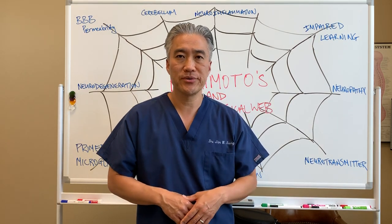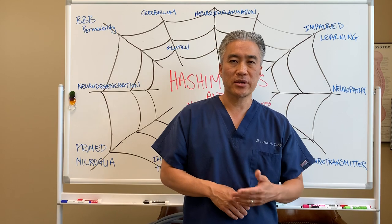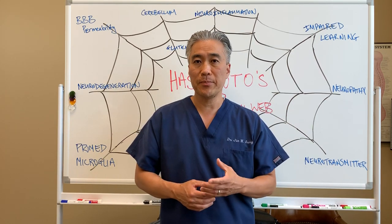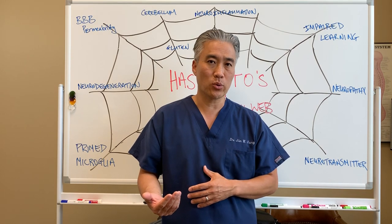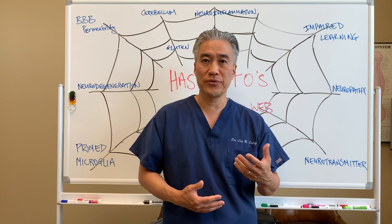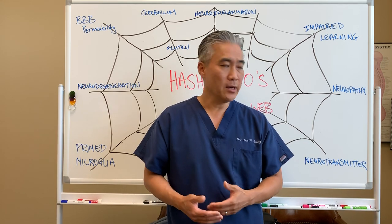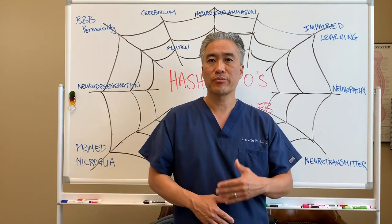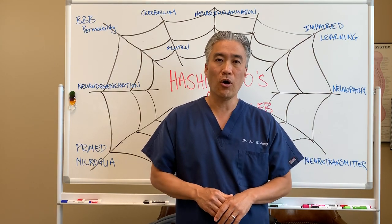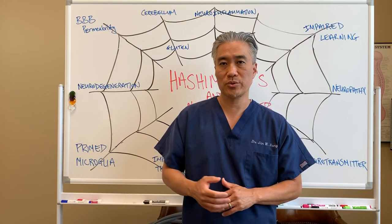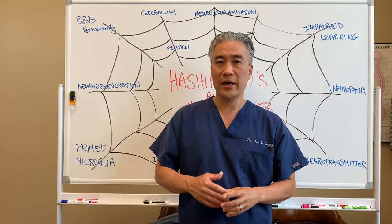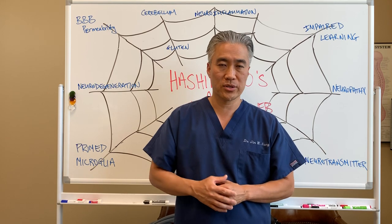Another effect is on neurotransmitters. Dopamine, serotonin, GABA — all these neurotransmitters can be impaired, one through inflammatory processes, or two due to cross-reaction to certain foods that impact the brain. Neurotransmitter production, transmission, and reception can all be impacted due to Hashimoto's thyroiditis, and that in turn will pull on the web and affect other parts of the brain.